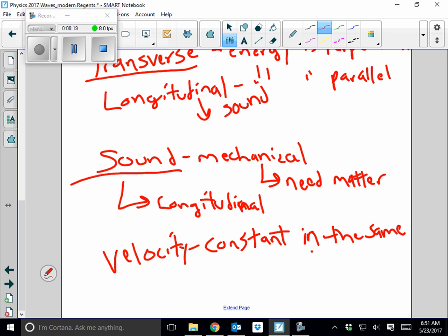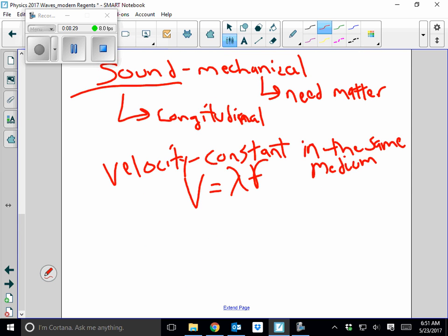We have the equation that governs the velocity of a wave. Remember that is v equals lambda times frequency. And since velocity is constant lambda and frequency are typically inversely proportional. Because if lambda goes up frequency has to go down to balance.